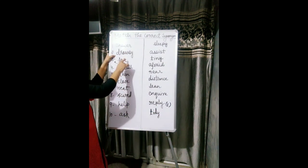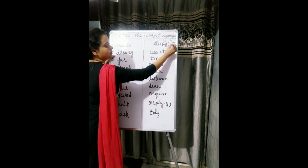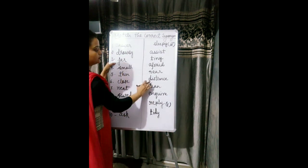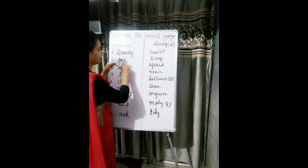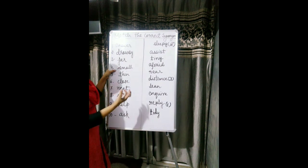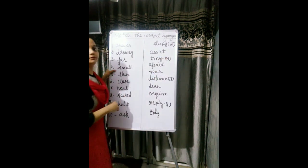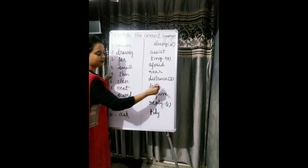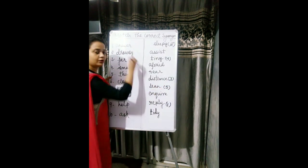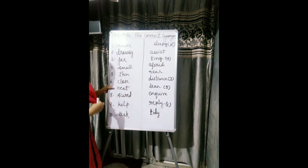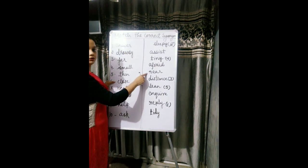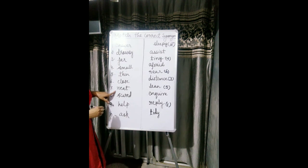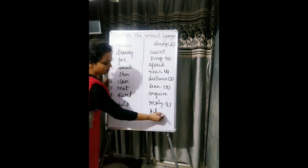Then small means tiny, number four. Then thin — thin is the synonym of lean, number five. Close means near, number six. Neat means tidy, number seven. Scared means afraid, number eight. Help means to assist someone, number nine. And ask — when you enquire somebody means to ask something, so enquire is number ten. In your book you have to match the upper word with the lower words.